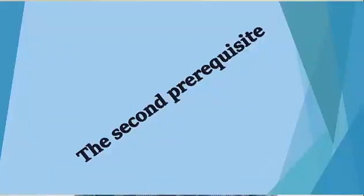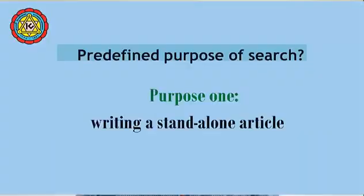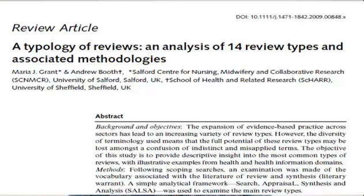The second prerequisite is having a predefined purpose of sources. Broadly speaking, there are two major reasons for doing literature review. The first is writing stand-alone articles. A number of stand-alone articles can be published from literature review, including narrative review, scoping review, systematic review, and meta-analysis.